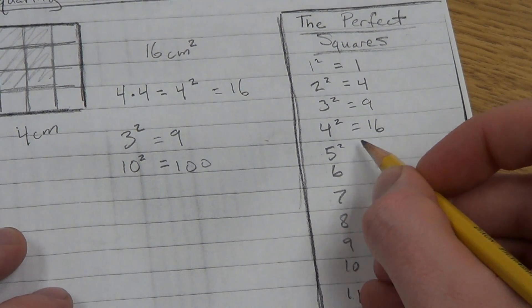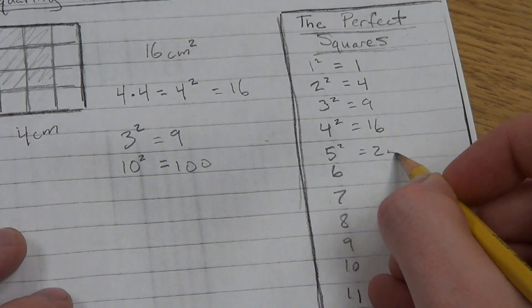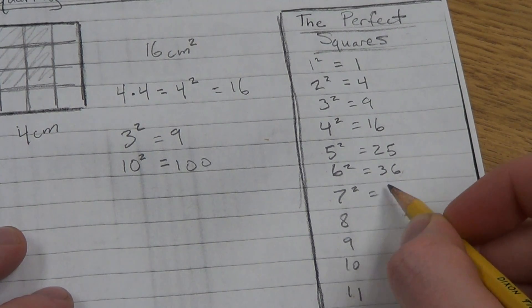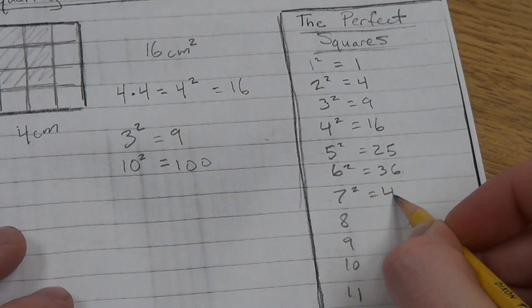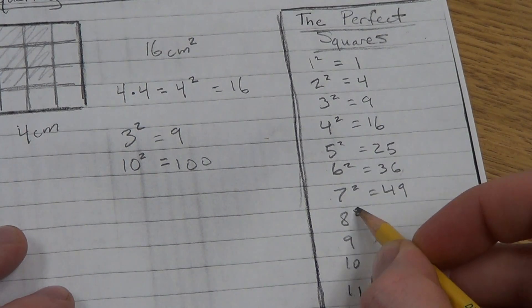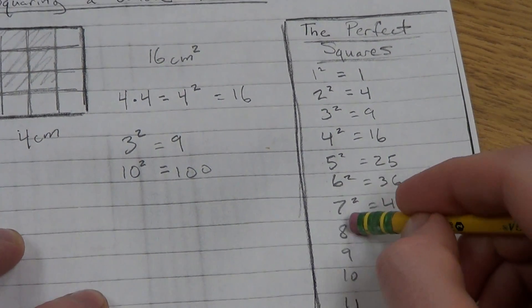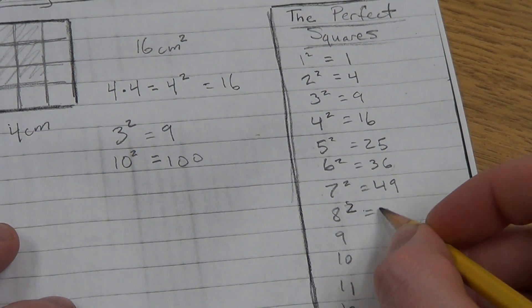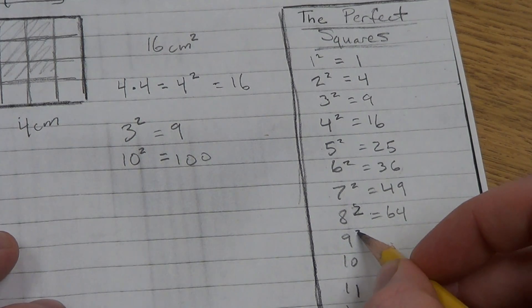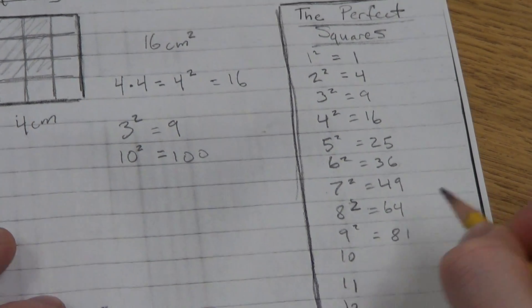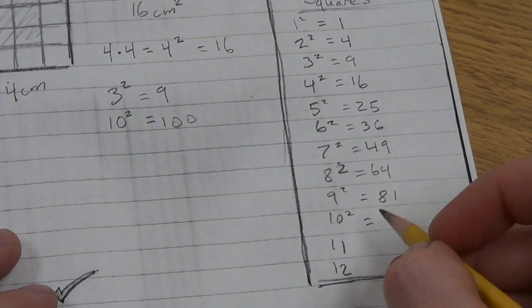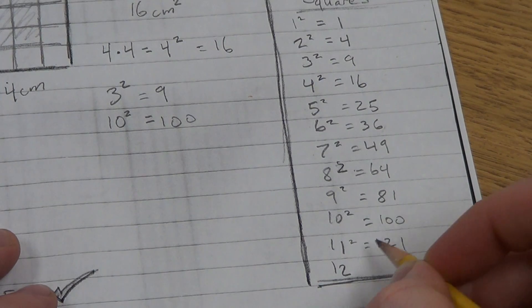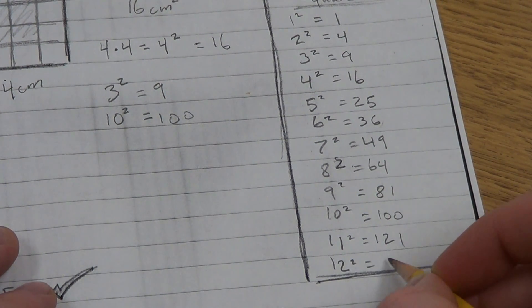5 squared, which is 5 times 5, is 25. 6 squared, which is 6 times 6, is 36. 7 squared is 49. 8 squared is 8 times 8, which is 64. 9 squared is 81. 10 squared is 100. 11 squared is 121, and 12 squared is 144.